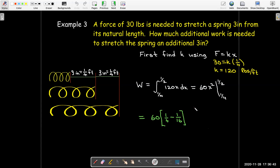Evaluate it from 1 quarter to 1 half. We need to square those values. 1 quarter minus 1 sixteenth, which is 3 sixteenths. And then, let's do some simplification. 4 goes into 60 15 times, and it goes into 16 4 times. So, that'll work out to be 45 over 4, or 11.25 foot pounds.